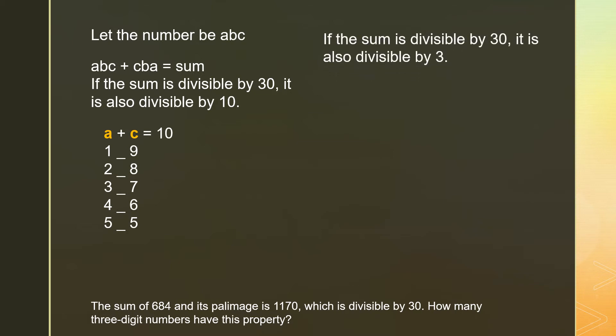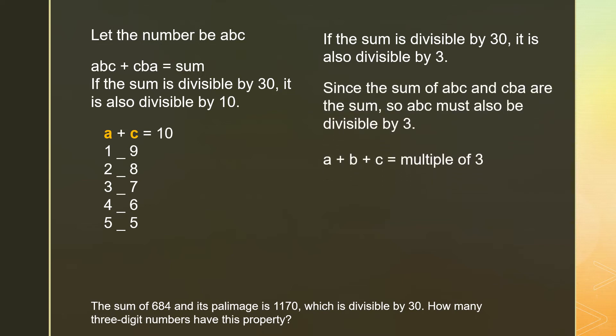If the sum is divisible by 30, it is also divisible by 3. Since the sum of ABC and CBA are the same, ABC must also be divisible by 3. A plus B plus C equals a multiple of 3. Since A plus C is 10, then 10 plus B equals a multiple of 3. Then B can be 2, 5, or 8.